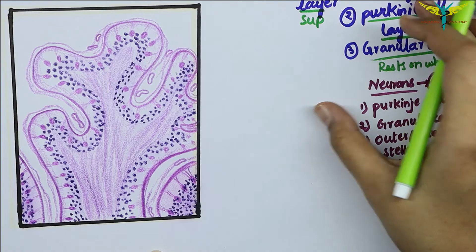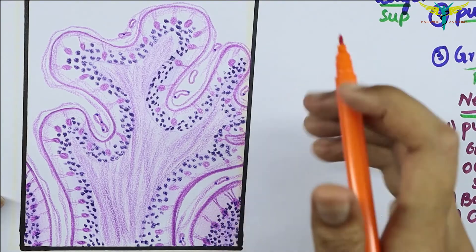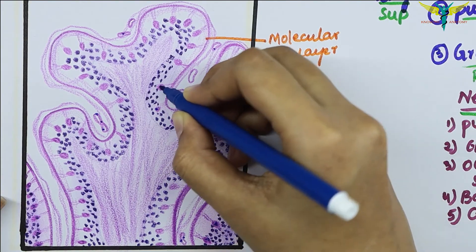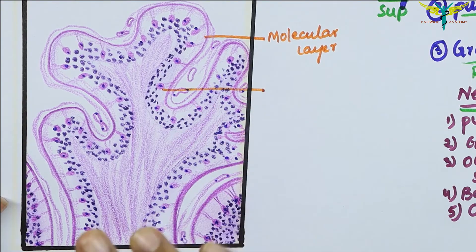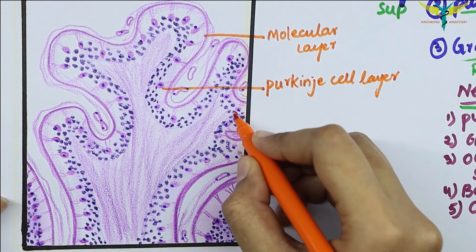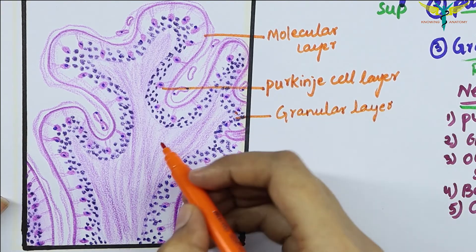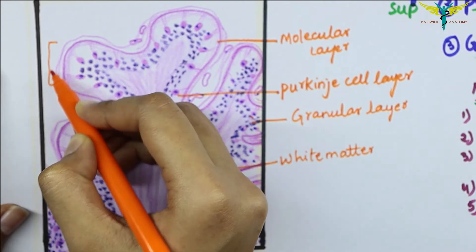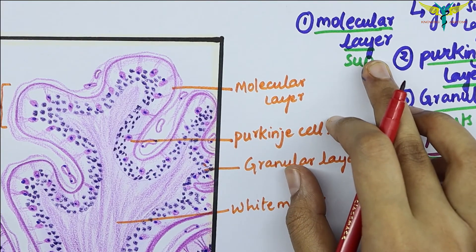Now let's label this diagram. This is the molecular layer, and these are the Purkinje cells. The layer in which the Purkinje cells are present is called the Purkinje layer. The third layer is the granular layer, which contains many granules, and inside is the white matter.